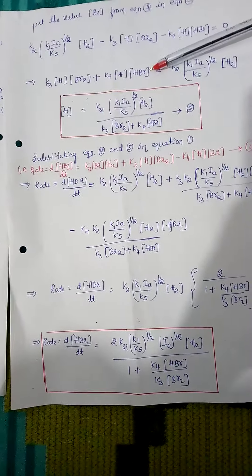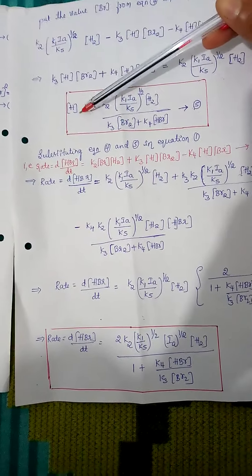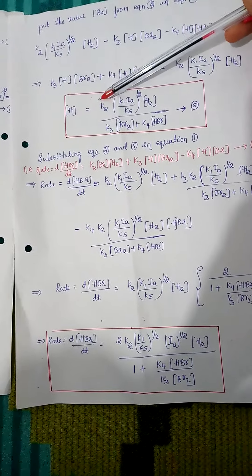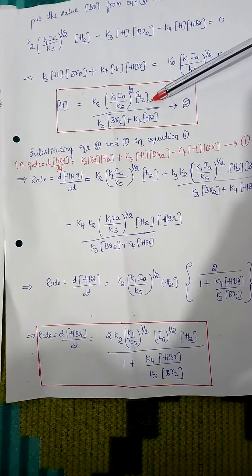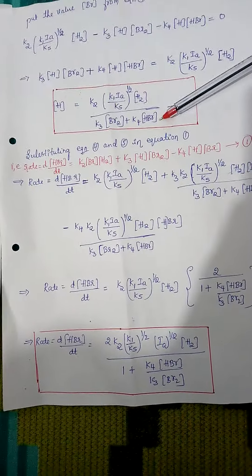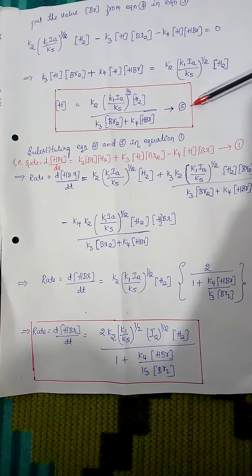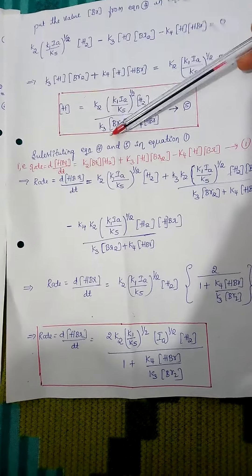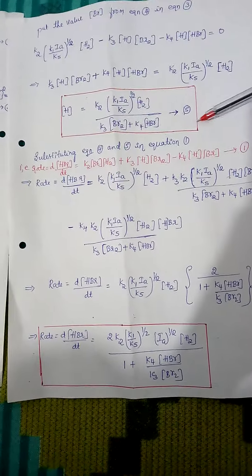Observing this equation, we can take [H] as a common factor. Taking [H] outside, we get: [H] = K2·(K1·Ia/K5)^(1/2)·[H2] / (K3·[Br2] + K4·[HBr]). This is called equation 5. After getting equation 5, we substitute equations 4 and 5 into equation 1.